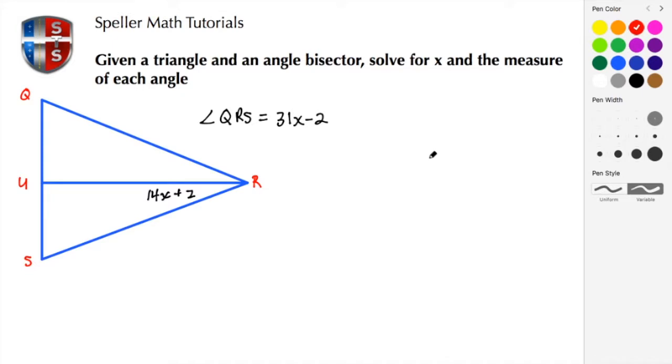Welcome back to Speller Math Tutorials. In today's tutorial, we're given a triangle and its angle bisector, and we're asked to solve for the variable x and to find the measure of the angles created by that angle bisector. Before we begin, if you find this tutorial helpful, please subscribe, like, and or share. Let's begin.